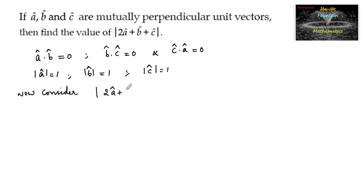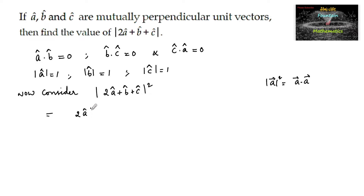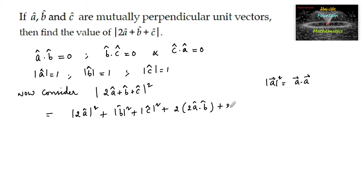We compute |2â + b̂ + ĉ|², and since |a|² = a · a, we expand this as: (2â)² + |b̂|² + |ĉ|² + 2(2â · b̂) + 2(b̂ · ĉ) + 2(ĉ · 2â).